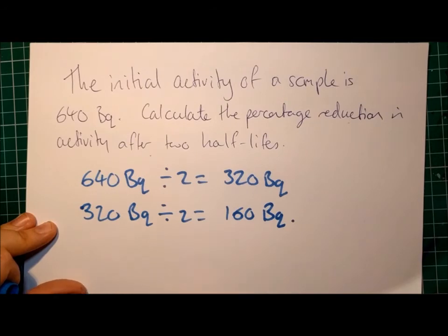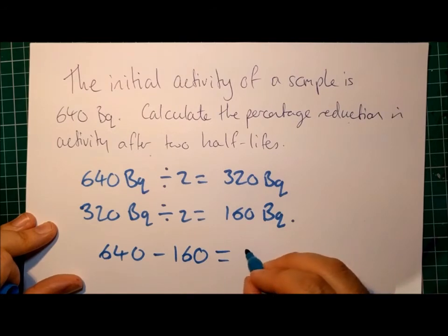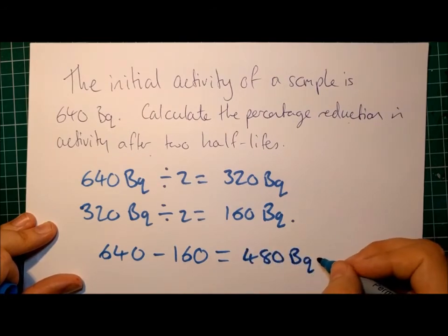So, we need to know how much is that reduced by. So we started with 640 becquerels, and we take away the 160 that remained at the end, and that would give us 480 becquerels difference. This is how much it reduced by.